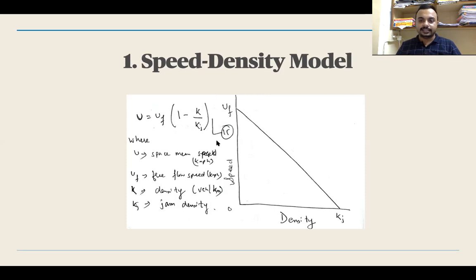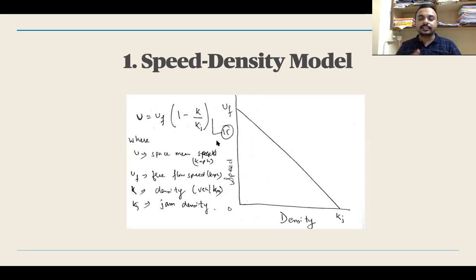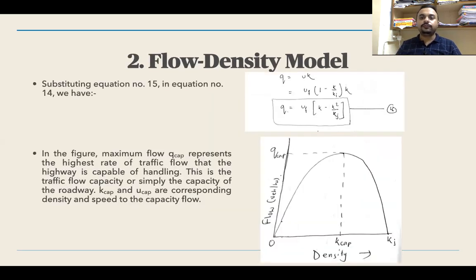When the density is maximum — suppose a one-kilometer stretch of road is completely packed with vehicles — that density is known as jam density, because that condition is known as a traffic jam condition. So, free flow speed occurs at negligible density, jam density occurs at maximum density, and the relation between speed and density follows a linear, straight-line relationship.